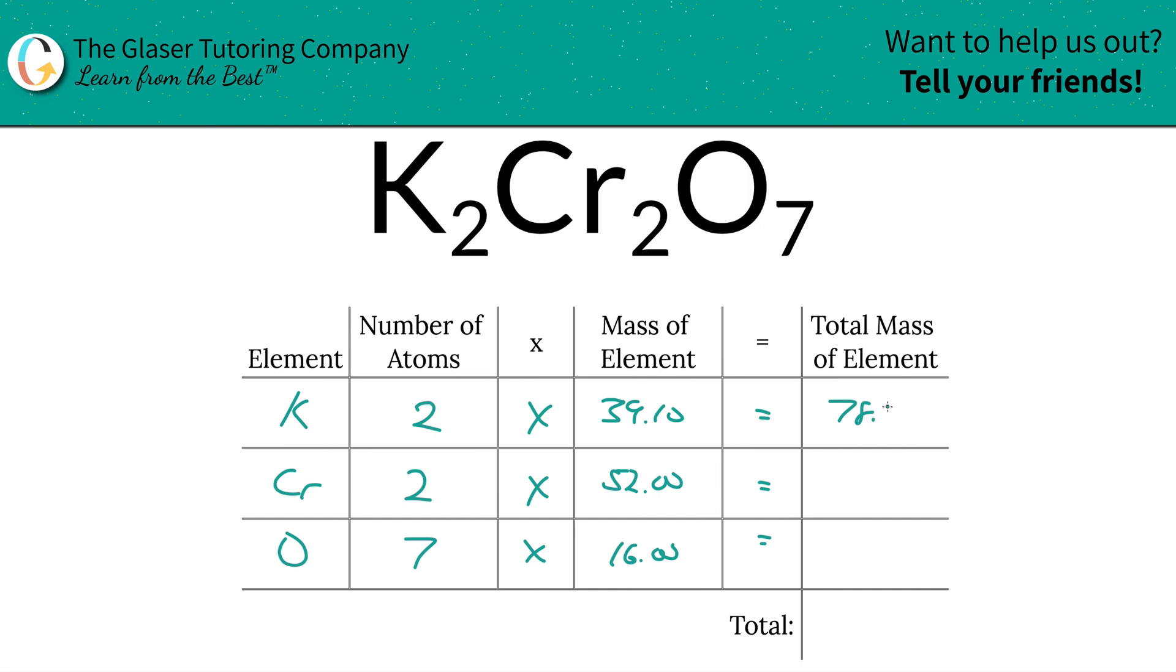Total mass of chromium is going to be 104, and then the total mass of oxygen will be 112.